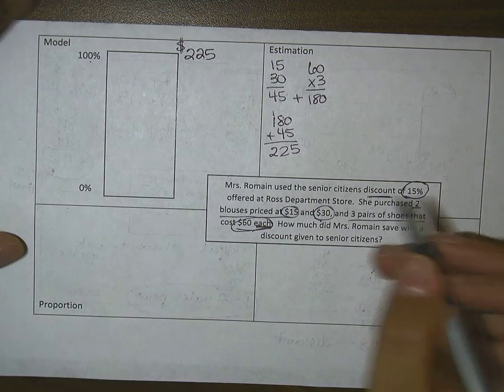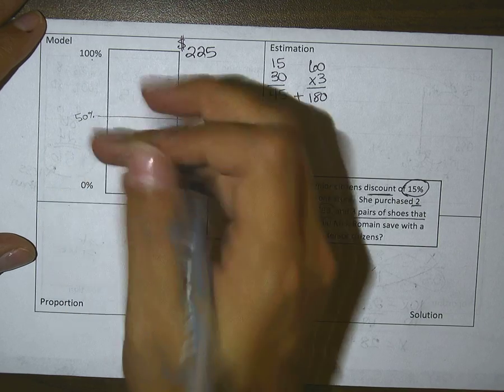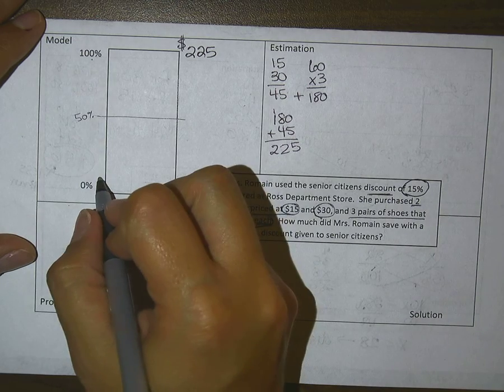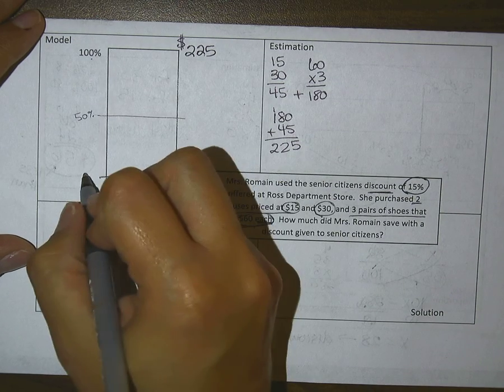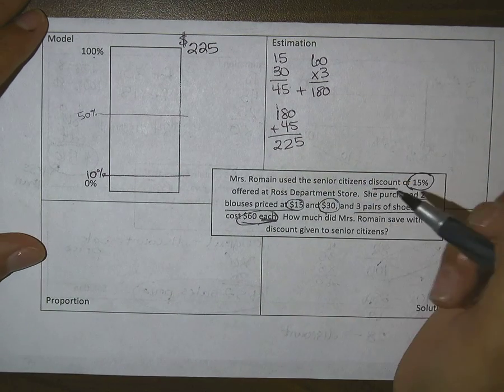Then it's talking about a 15% discount. There's my 50%, which we don't really need to solve for. I want to find 10%. Why would I want to find 10%? Because it's easy.